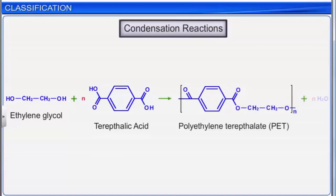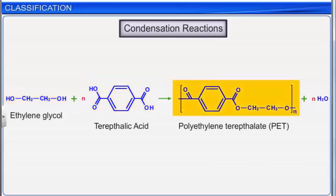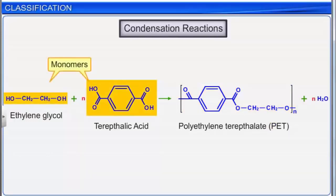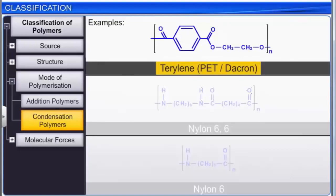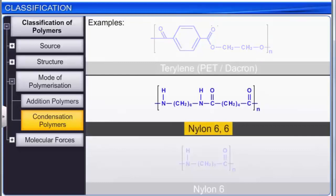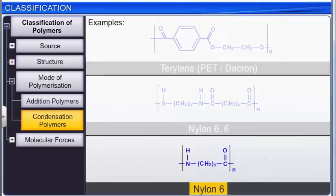The condensation reaction between ethylene glycol and terephthalic acid forms polyethylene terephthalate, or PET. When two different monomers link together, a water molecule is eliminated. Important examples of condensation polymers are Terylene, also known as PET or Dacron, Nylon-6,6, and Nylon-6.